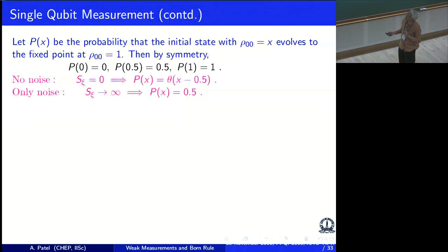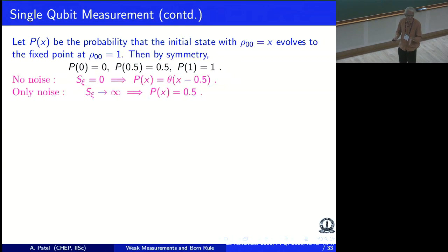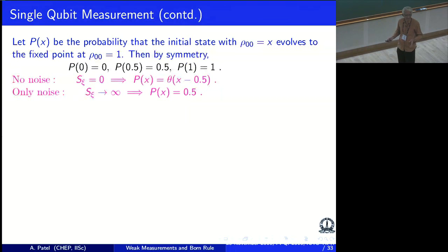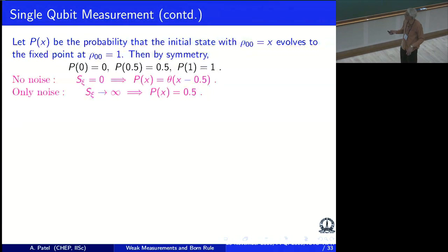Now let us try to understand what kind of spectral density will do a good job. If I have no noise, then the density matrix evolves to the nearest fixed point — the probability of going there is basically a step function: if I'm on this side I go there, if I'm on the other side I go there. If I have only noise — large fluctuations — the situation is basically democratic; I go all over the place and both are equally likely. Neither of them is the Born rule, but they are kind of extreme symmetric situations.